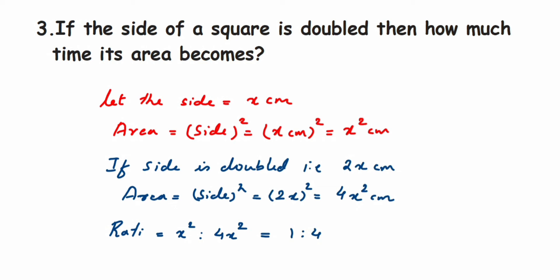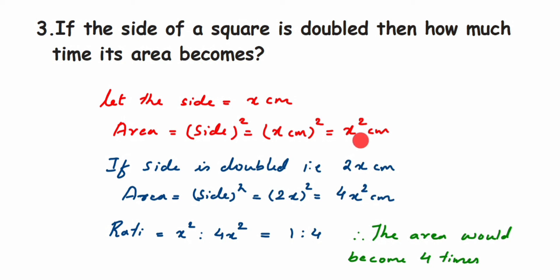Therefore, the area would become 4 times. You can also just compare x² and 4x² directly to conclude the area has become 4 times more. That's the third question. Let's move to the last question.